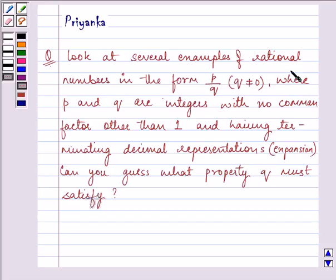Look at several examples of rational numbers in the form p by q where p and q are integers with no common factor other than 1 and having terminating decimal representations. Can you guess what property q must satisfy?